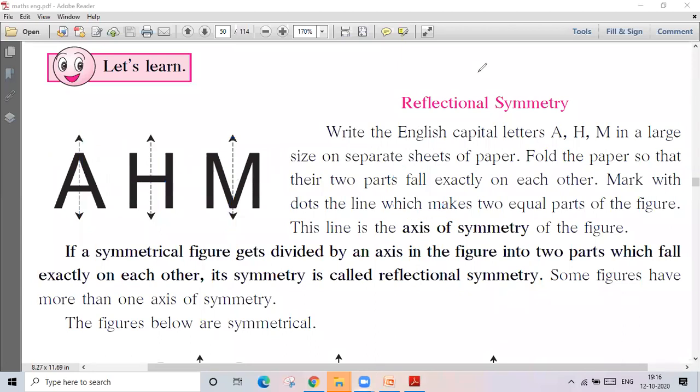You have to write the English letters A, H, M in a large size on a separate sheet of paper. Fold the paper so that their two parts fall exactly on each other. Mark with the dots on the line, and this line is known as the axis of symmetry.